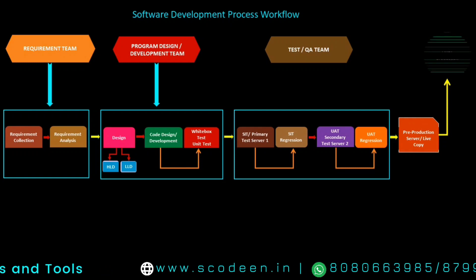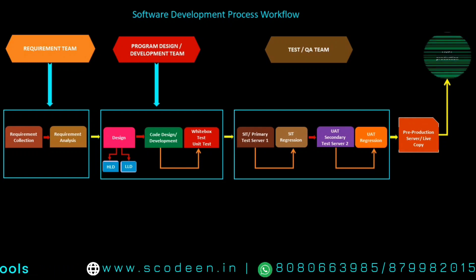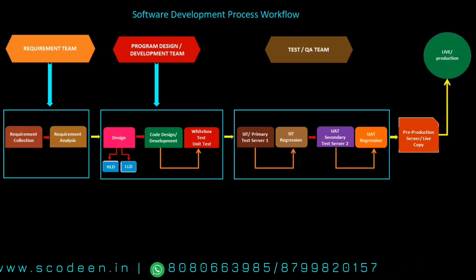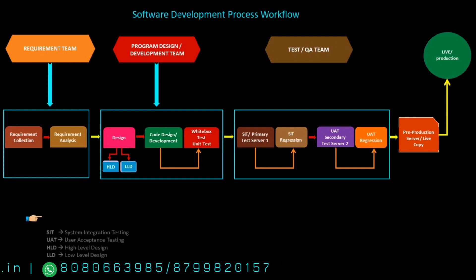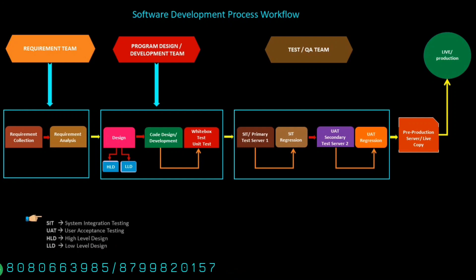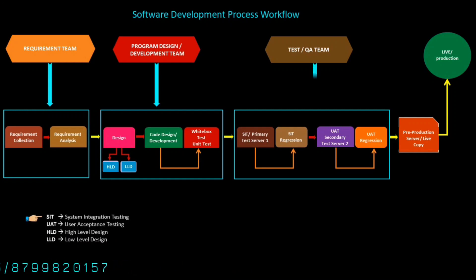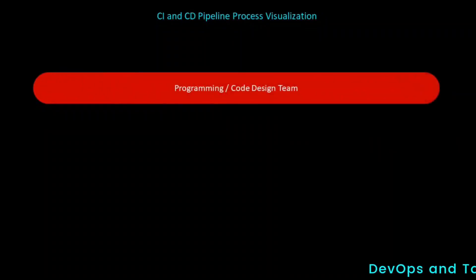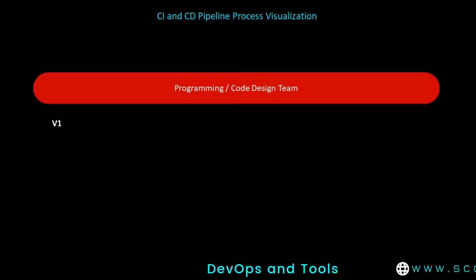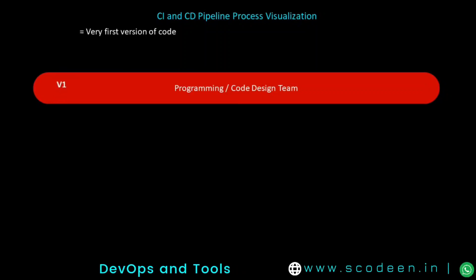These four major stages belong to the testing team. Next comes pre-production, which is a replica of the live environment — a live copy — where we can measure the performance of the code. After the pre-production server, the build moves to live. Most importantly, we need to understand the CI/CD pipeline: CI stands for Continuous Integration and CD stands for Continuous Deployment.